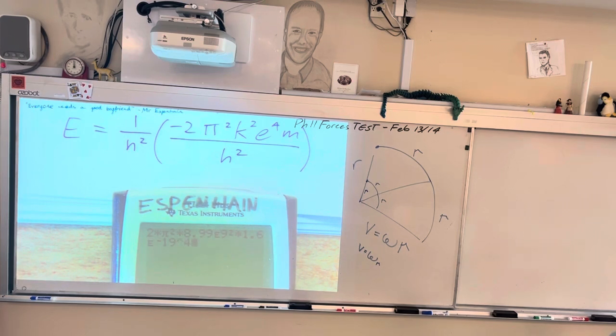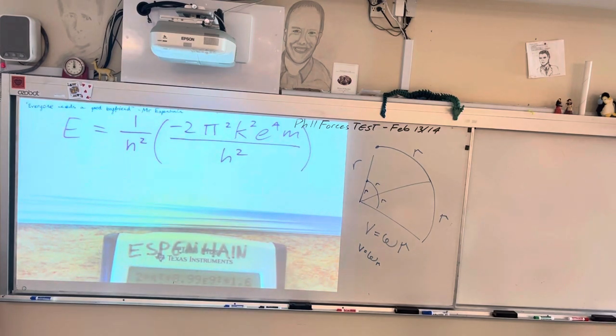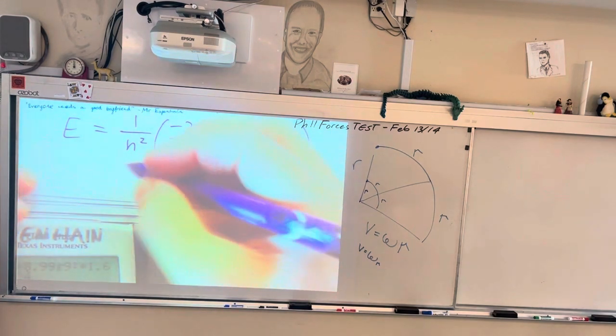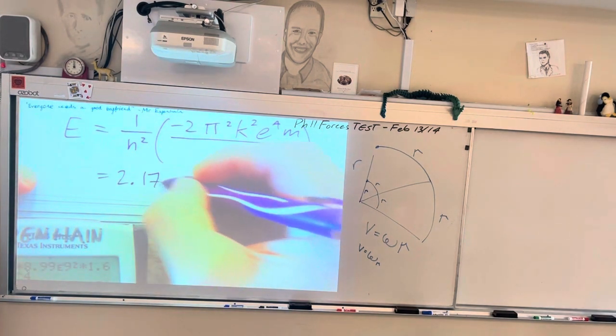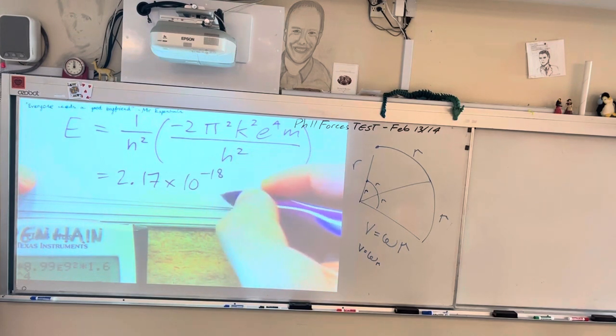And you've got to put that to the fourth. Wait, n has to go to the fourth? No, the charge has to go to the fourth. And I'm just going to hit equals there. And then I'm going to times by the mass of the electron, which is 9.11 times 10 to the negative 31 kilograms. And I'm going to press equals there. And then you want to divide by Planck's constant, which is 6.63 to the negative 34. And you have to square it. This is in joules. So the answer to this is equal to about 2.17 times 10 to the negative 18 joules.